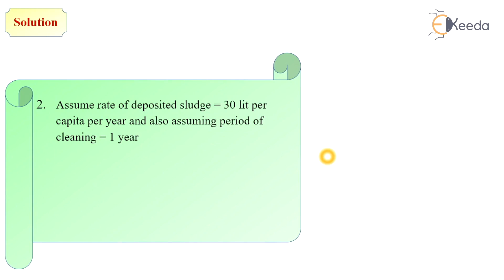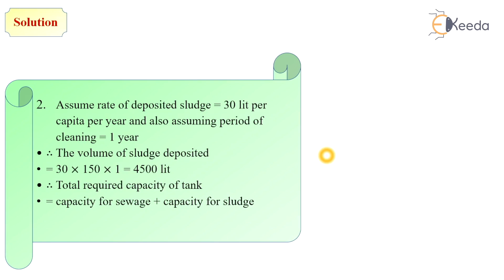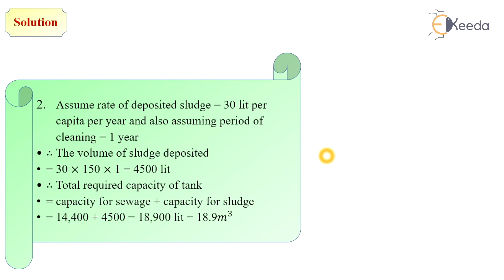Next, assume the rate of deposited sludge equals 30 liters per capita per year, and the period of sludge cleaning is 1 year. The volume of sludge deposited equals 30 into 150 — where 150 is the population — for 1 year, so total sludge deposited is 4,500 liters. The total required capacity of tank is the addition of capacity for flow plus capacity for sludge: 14,400 plus 4,500 equals 18,900 liters.